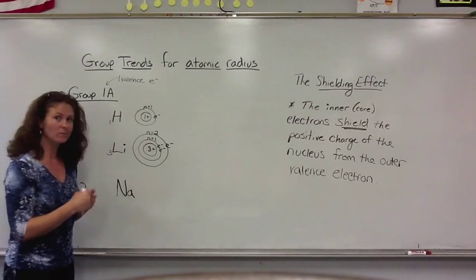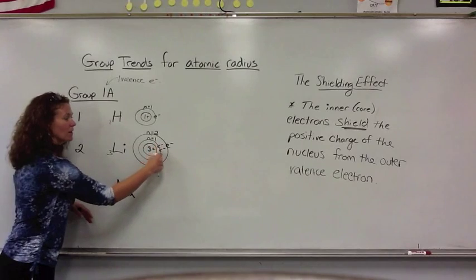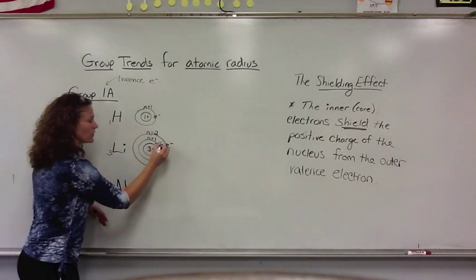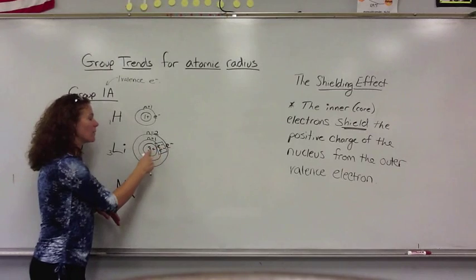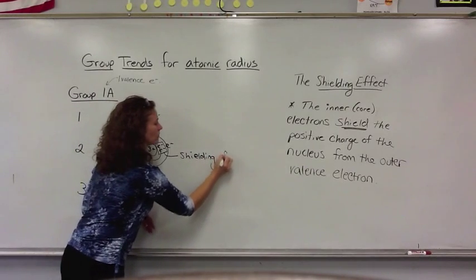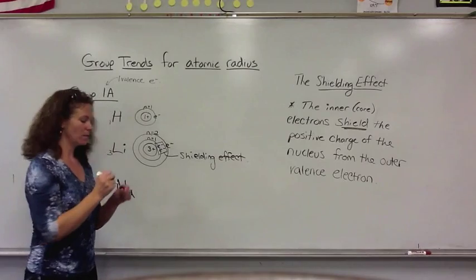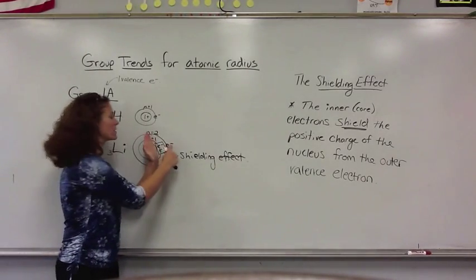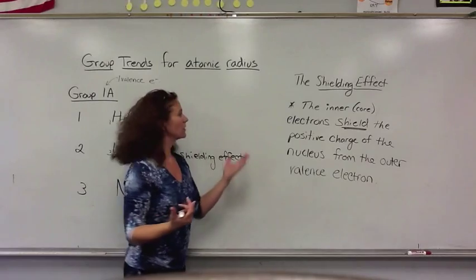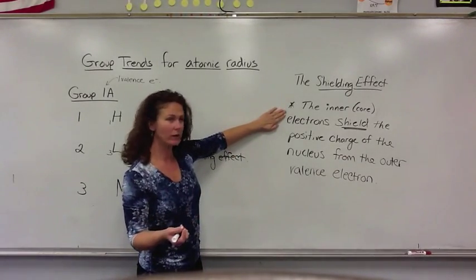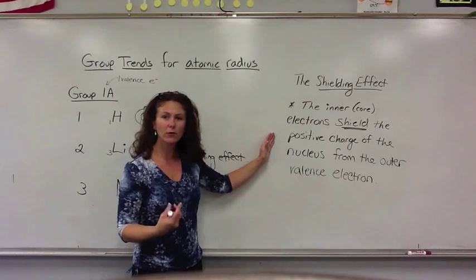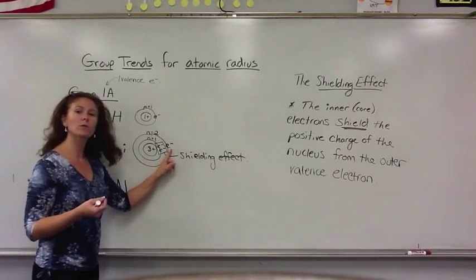Looking at sodium, you're going to see a common factor — we get increasingly more electrons in between the outermost electron and the positive charge of the nucleus. These electrons between the outermost electron and the positive charge of the nucleus are known as causing a shielding effect. They are literally blocking this outer negative particle from being attracted to the positive charge of the nucleus. The true definition of the shielding effect is that the inner or core electrons actually shield the positive charge of the nucleus from the outermost valence electron.